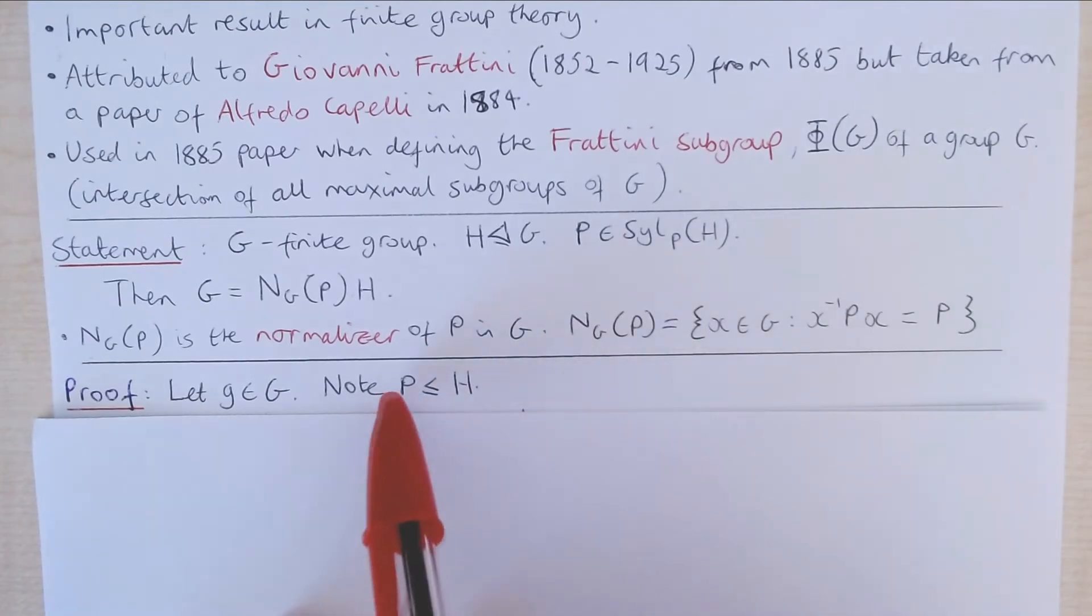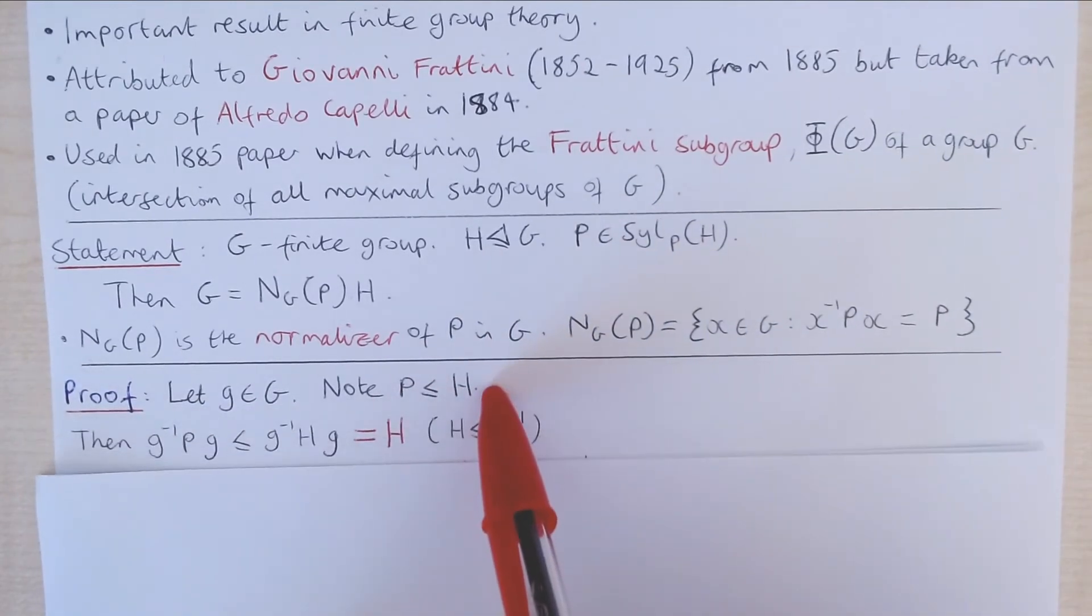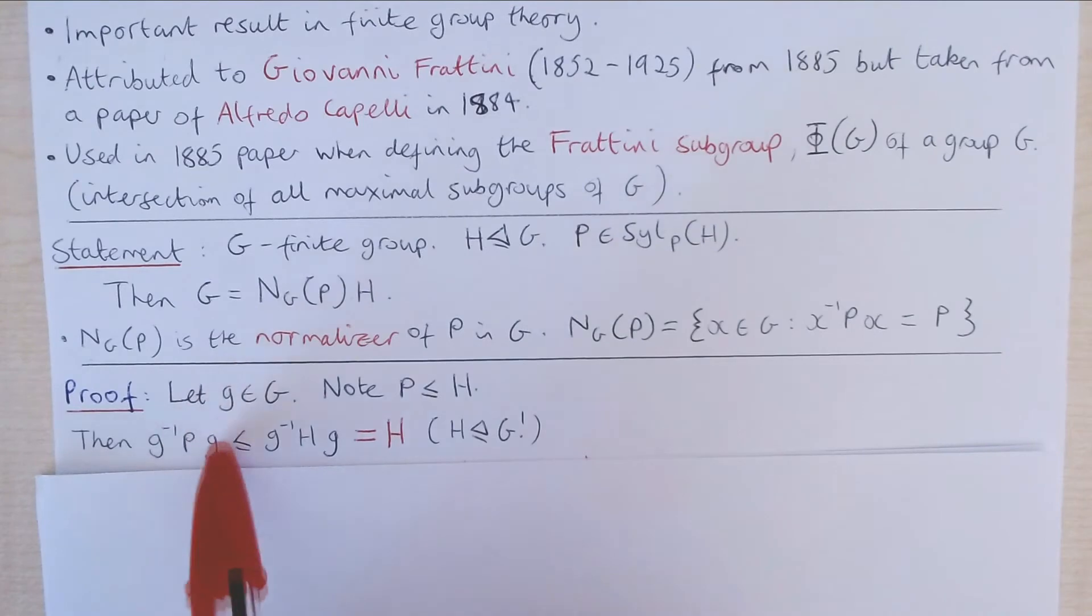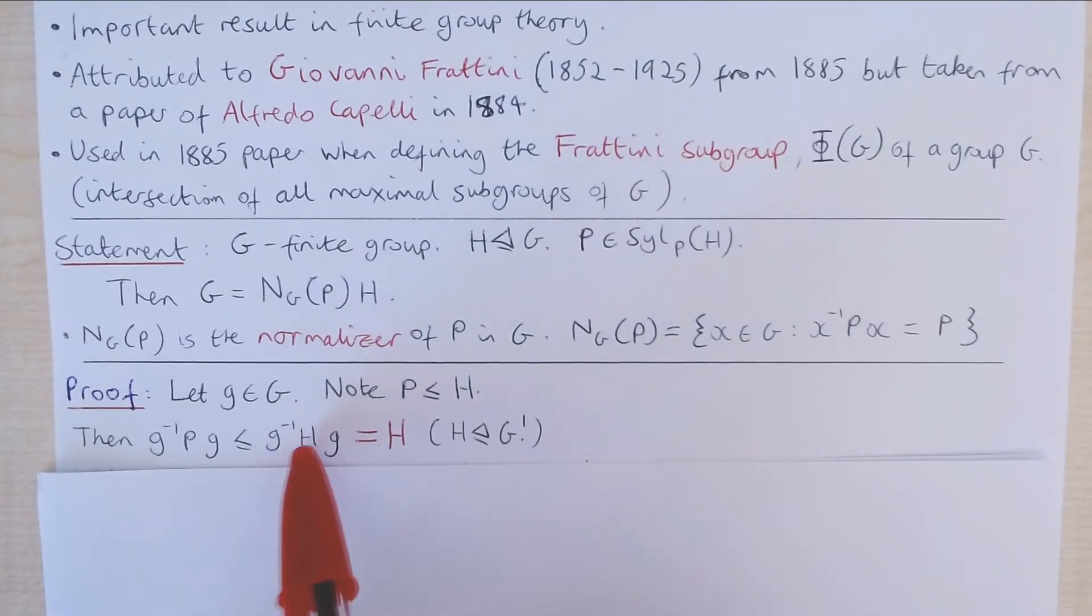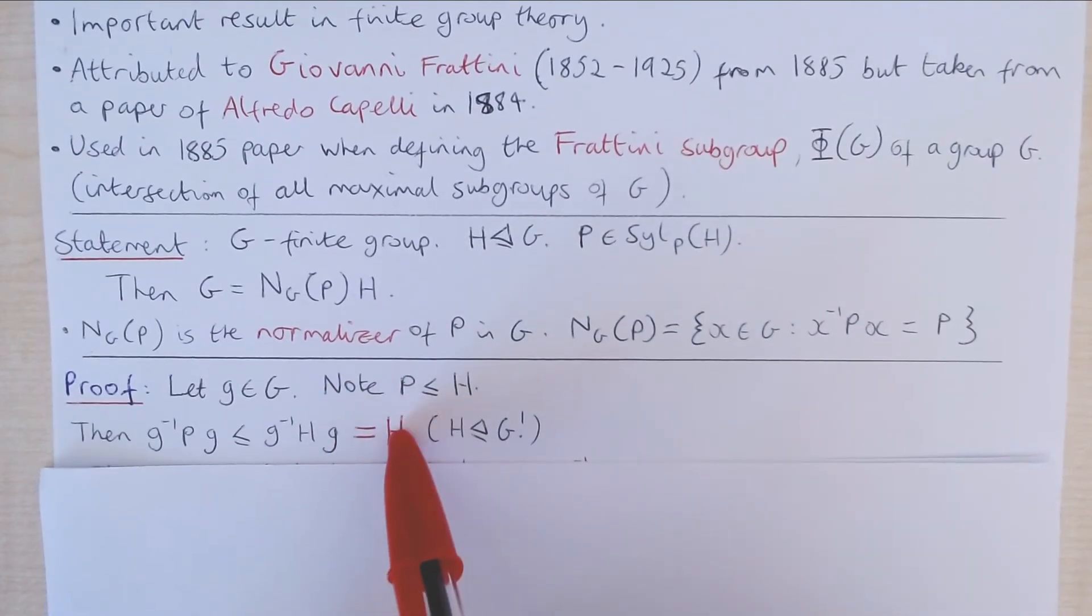We can now conjugate both sides of this by G to give us that this subgroup, G inverse P G, is a subgroup of this subgroup, G inverse H G. But note that because H is a normal subgroup of G, that just means that this G inverse H G is equal to H.